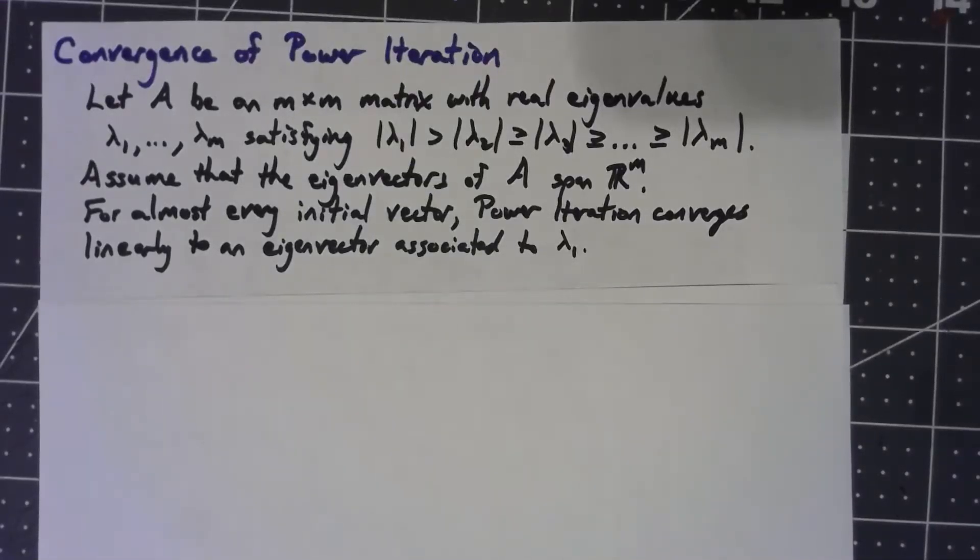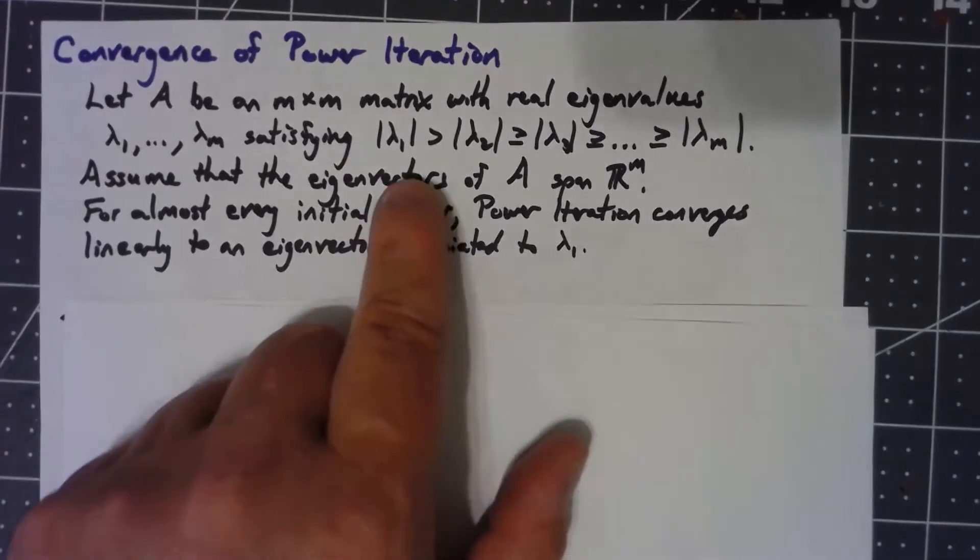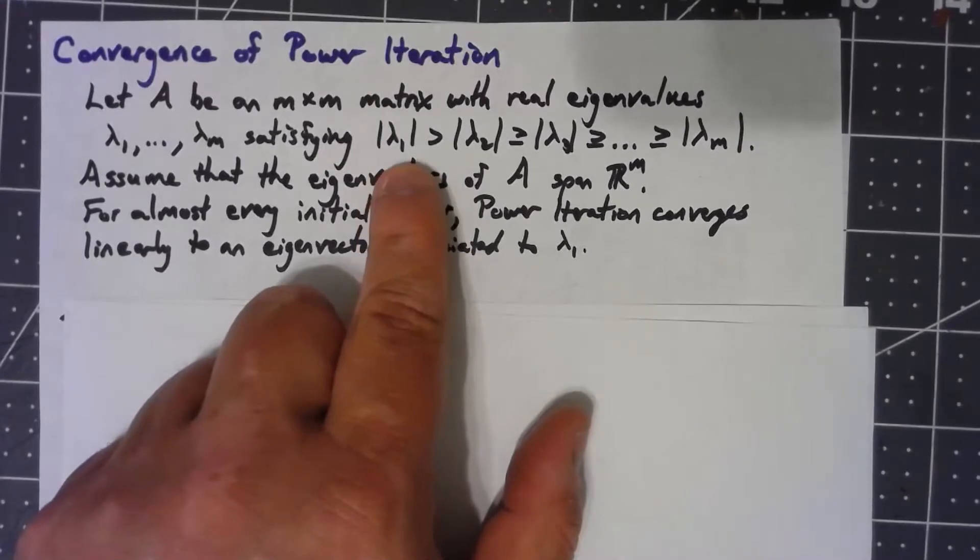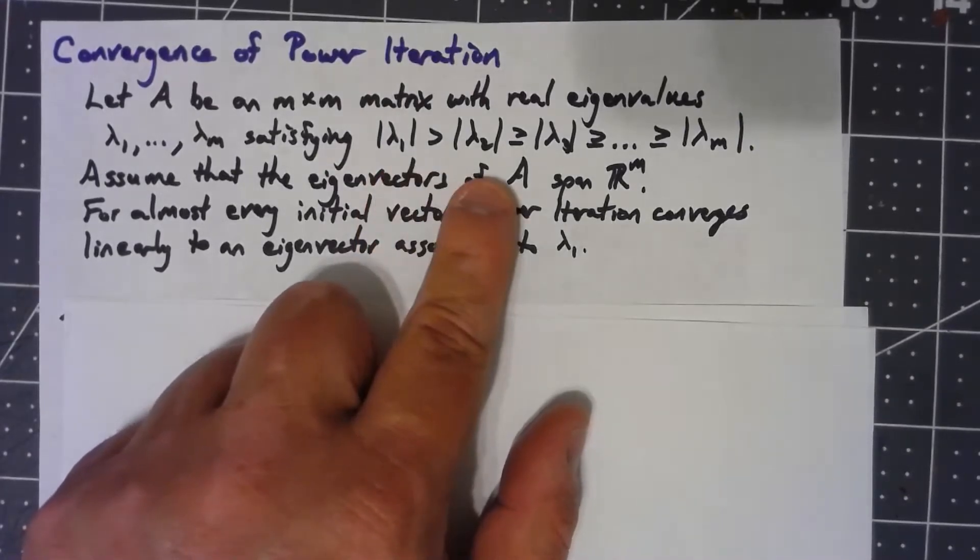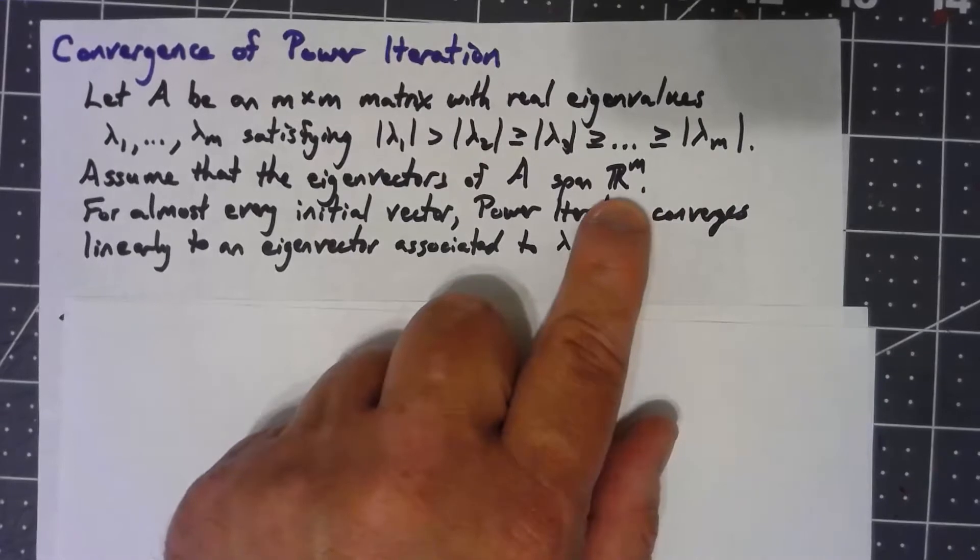Okay, so we've talked about how power iteration works. Now let's prove that it works. Let's say we've got a square matrix with real eigenvalues such that lambda_1 is the largest one, strictly bigger than any of the others. The others might have some equalities, no big deal.